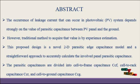The parasitic capacitances are divided into cell-to-frame capacitance Ccf, cell-to-rack capacitance Ccr, and cell-to-ground capacitance Ccg. Based upon that, a pi shape circuit model is derived to predict the leakage current in PV array. The approaches are very useful for the evaluation of leakage current in the PV system.